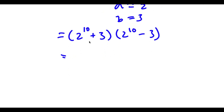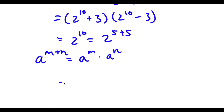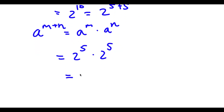Now 2 to the power of 10 — let's first go ahead and solve this. This is the same thing as 2 to the power of 5 plus 5. And if I have something in the form a to the power of m plus n, this is equal to a to the power of m times a to the power of n. So 2 to the power of 5 plus 5 equals 2 to the power of 5 times 2 to the power of 5. Now 2 to the power of 5 is equal to 32, so I have 32 times 32.